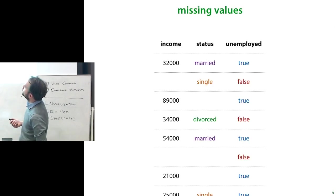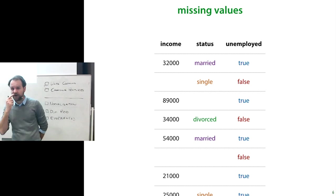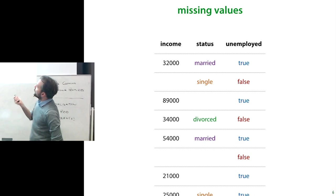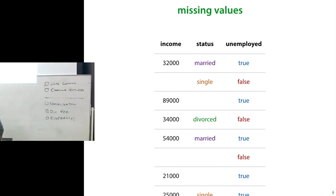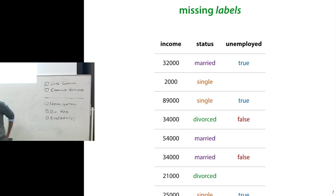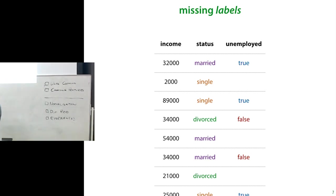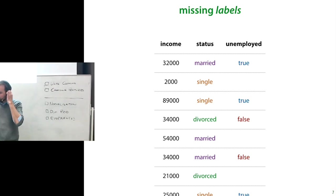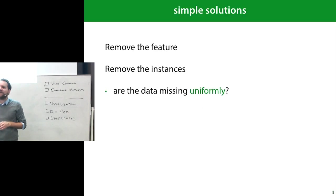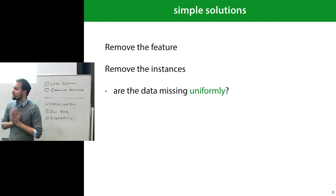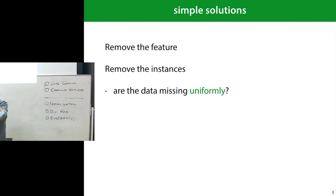Two things can be missing: your labels can be missing or your values. Here we have a data set with a target column — whether they are unemployed — and some of the values of some feature columns are missing. You can also have missing labels where all the features are complete but some labels are missing. Even though they look the same, how you handle this differs between the two cases. If you don't have a lot of missing values, or if the missing values are only in one feature column that's not very important, you can just remove the feature. But if you do that too much, you're throwing away a lot of data.